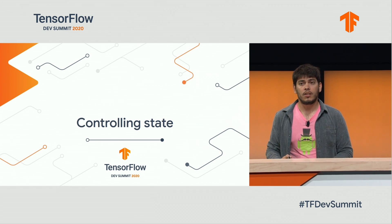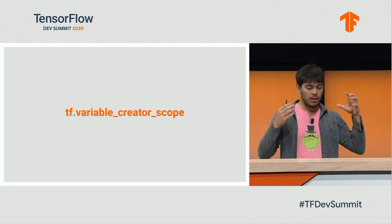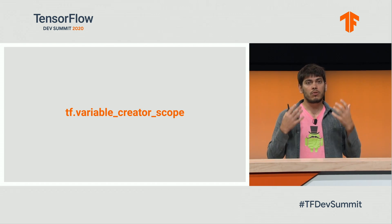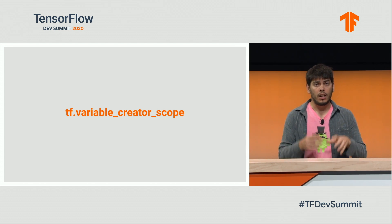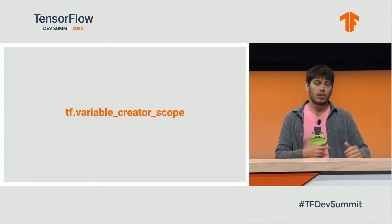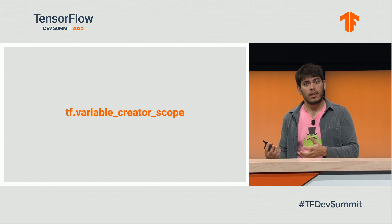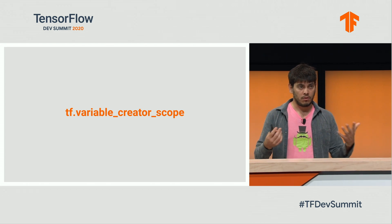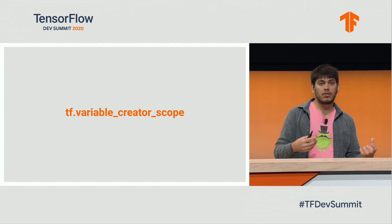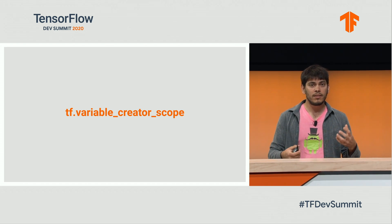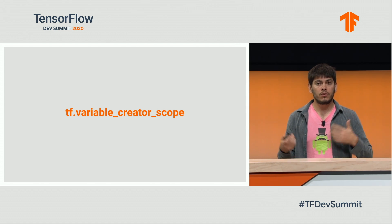The way to do this is to use tf.variable_creator_scope. It is a tool that lets you take control of the state creation process in TensorFlow. It's a context manager, and all variables created under it go through a function you specify. This function can choose to do nothing, delegate, or modify how variables are created. Under the hood, this is what distribution_strategy.scope usually implies — the same tool we use to build TensorFlow that we make available to you so you can extend it.